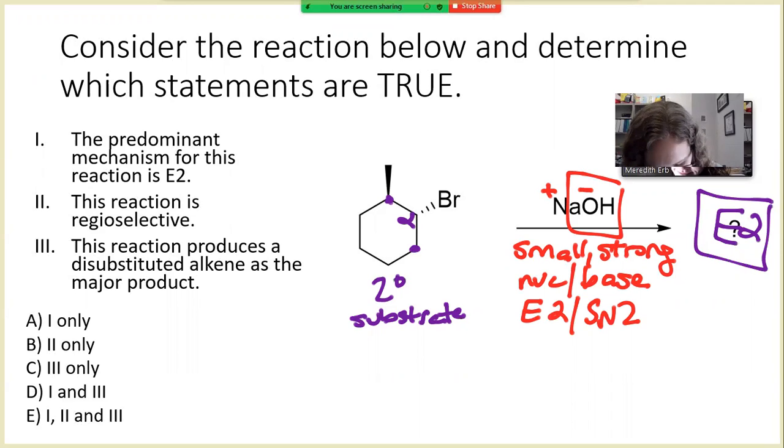One of the key requirements of the E2 reaction is that you have an antiperiplanar arrangement of the leaving group and the beta hydrogen. Let's take a look at our beta positions and what type of hydrogens we have located there. On the right-hand side, we have two hydrogens, a wedged hydrogen and a dashed hydrogen. On the left-hand side, we have only one hydrogen atom.